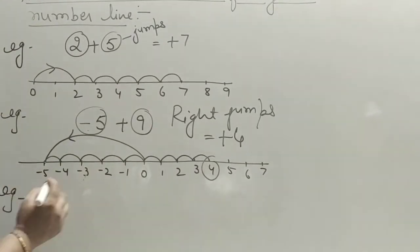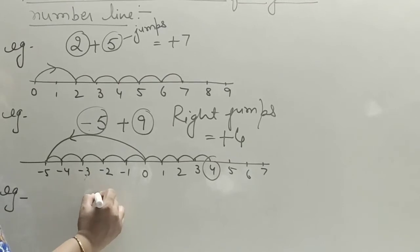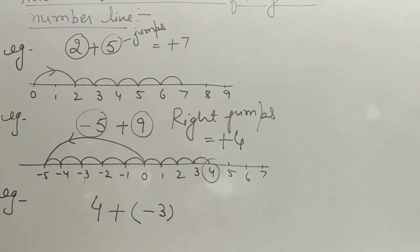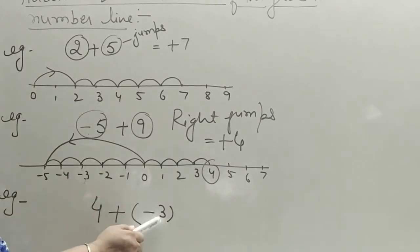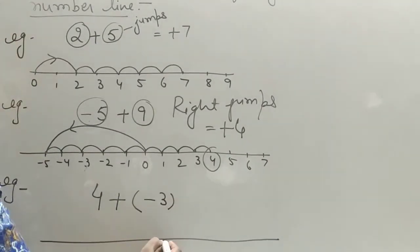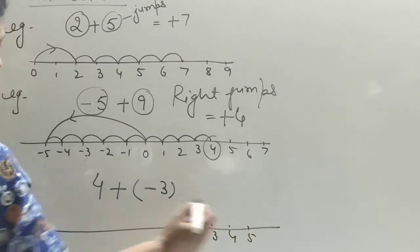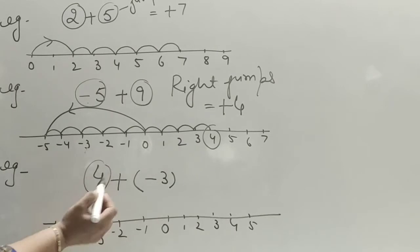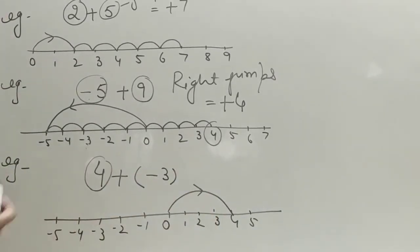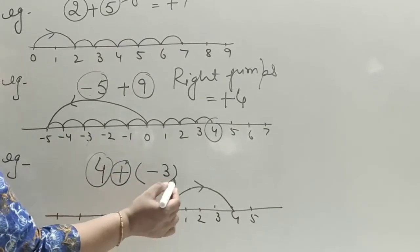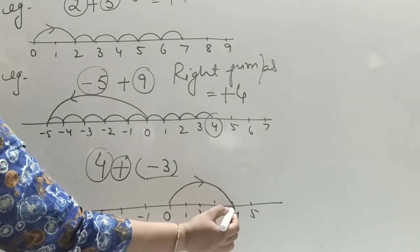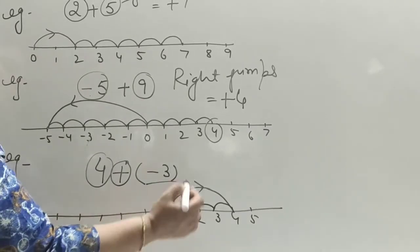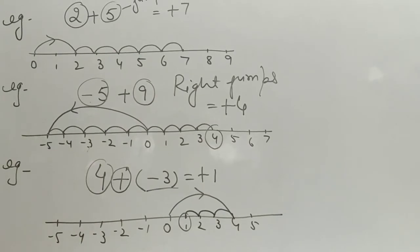For 4 plus minus 3: the first number is positive, so start at zero and move right to 4. The second integer is negative, so we jump to the left side — one, two, three. The answer is plus one. By this way we do addition of integers on the number line.